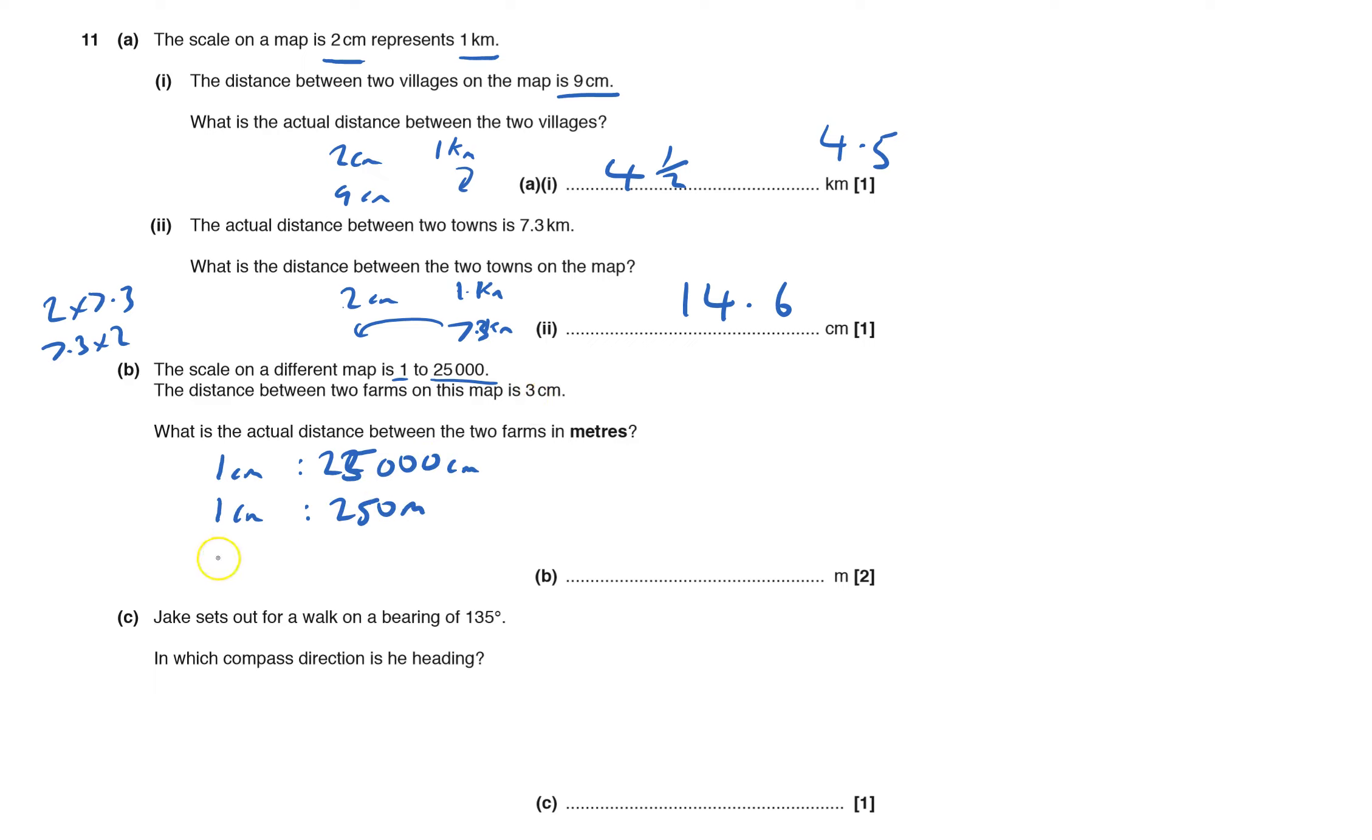Three centimeters, times that by three, gives 750 meters.